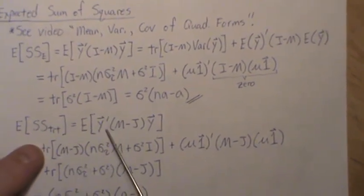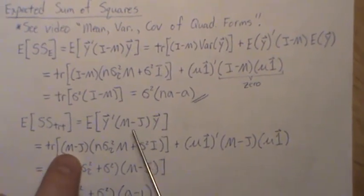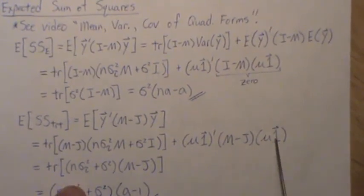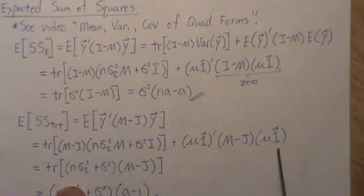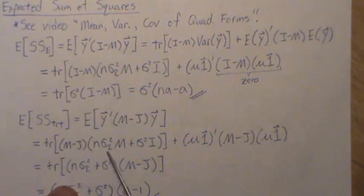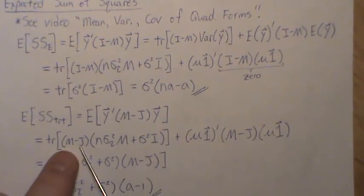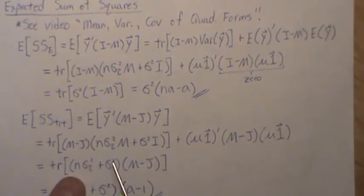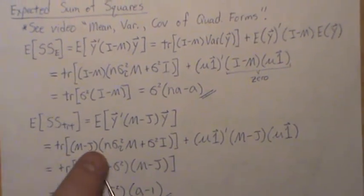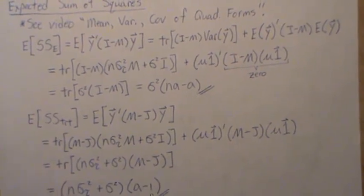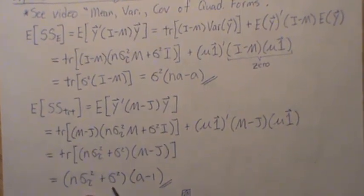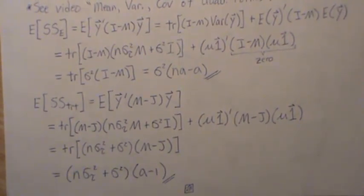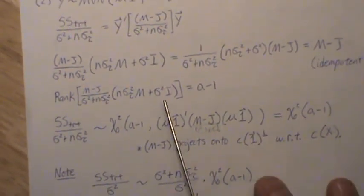The expected value of SS_Treatment uses the same theorem: trace of (M minus J) times the variance, plus the mean term. The mean term goes to zero since M minus J projects onto the orthogonal complement of the one vector within the column space of X. For the trace term: (M minus J)·M = M minus J and (M minus J)·I = M minus J, so we factor that out and are left with (σ² + n·σ_τ²), and the trace of (M minus J) is a minus 1. So E[SS_Treatment] = (a minus 1)(σ² + n·σ_τ²). Developing unbiased estimates for σ_τ² or σ² from this will be addressed in another video.